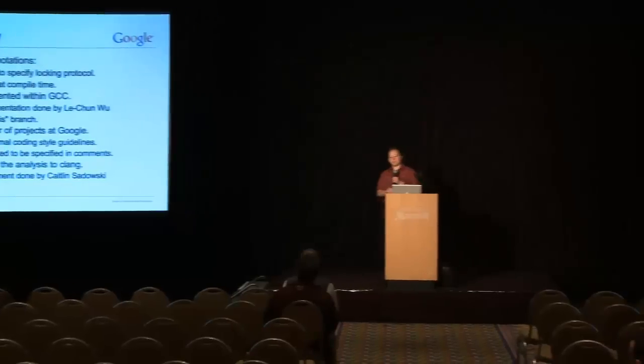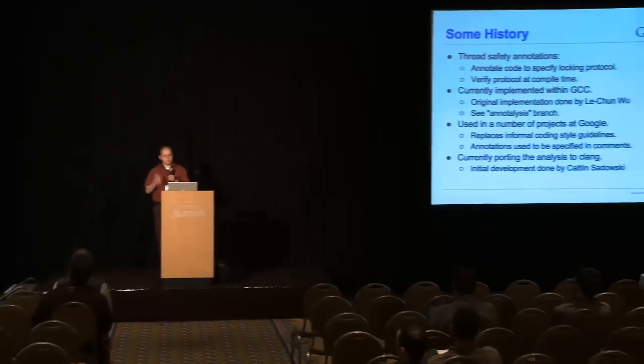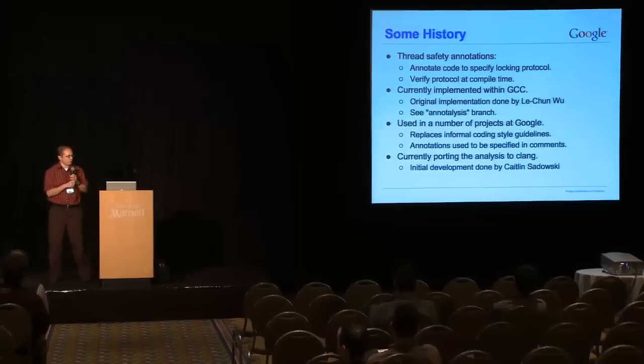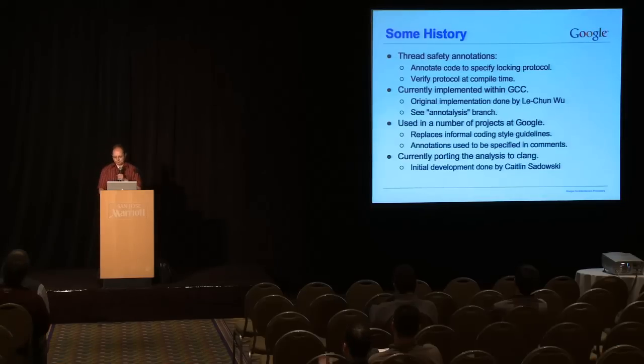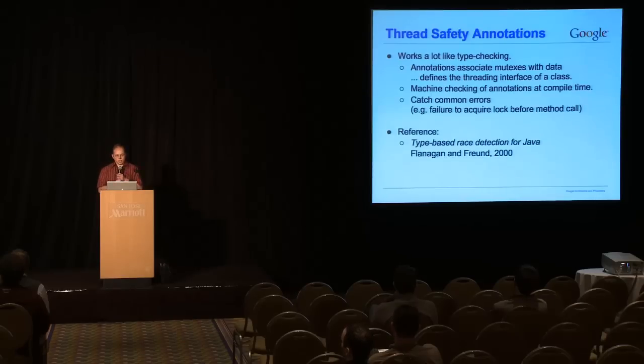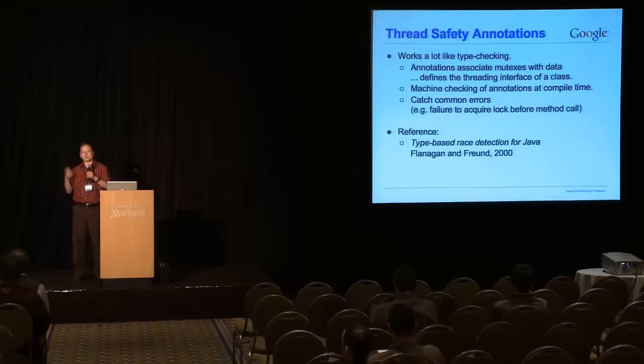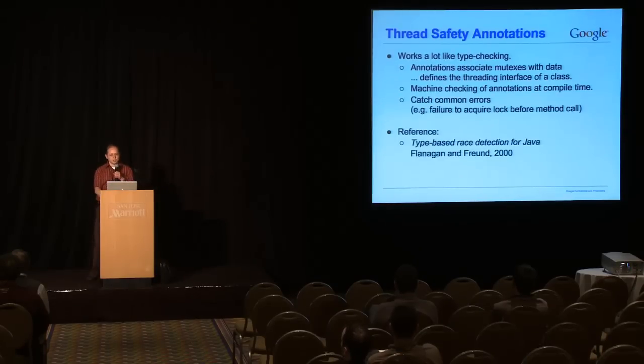We are currently porting it from GCC to Clang. The initial port was actually not done by me. It was done by an intern by the name of Caitlin. And it has been handed off to me as the current maintainer. So, as I mentioned, thread safety annotations work a lot like type checking. The basic idea is to establish a locking protocol, associate which mutexes guard which pieces of data. And it, like type checking, it doesn't catch deep errors. It catches the common stupid errors that you make when issuing lots of lock and unlock calls throughout the code.